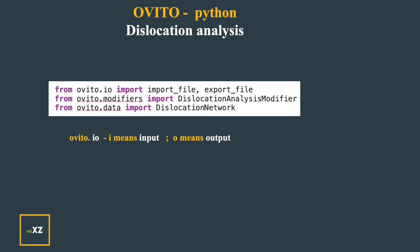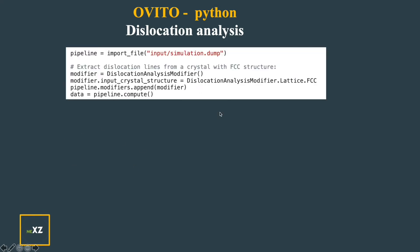Now I am using only one modifier which is dislocation analysis modifier and I am using ovito.data. I am importing the dislocation network. From there I can get a few other information.